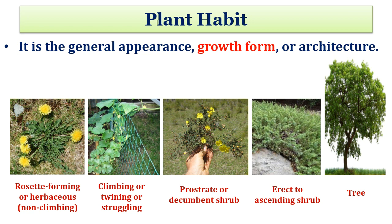Second is climbing, twining, or straggling. In this type, the plant may be woody or herbaceous, but stems are not self-supporting, so they need some sort of anchorage. Third is the prostrate or decumbent — the plant is woody, spreading flat along the ground with its tip turning upwards. Next habit is the erect or ascending shrub — upright, having multiple stems and smaller than trees.